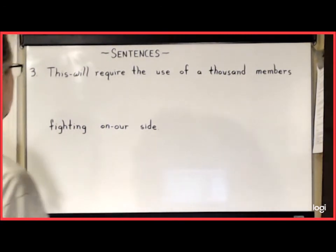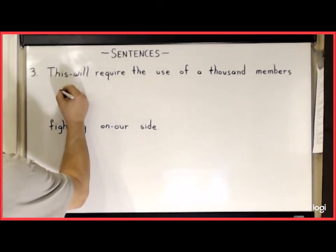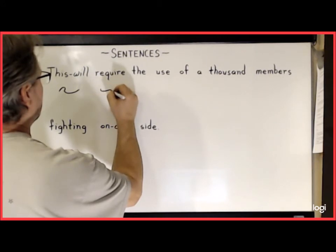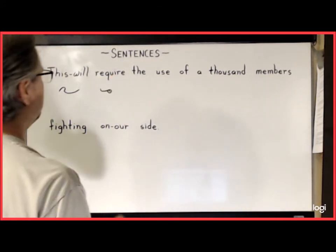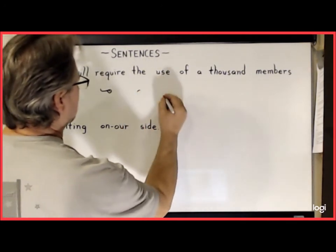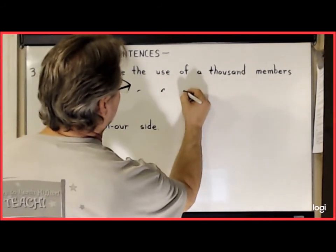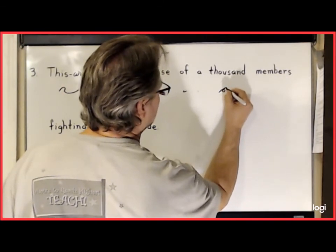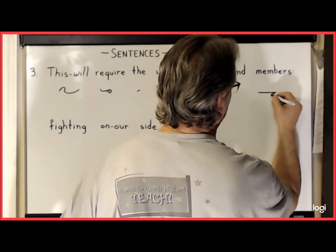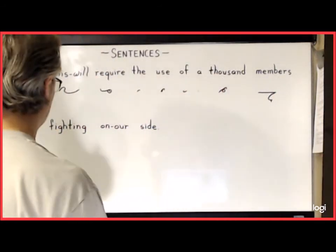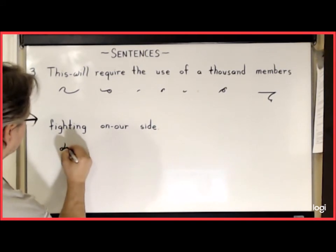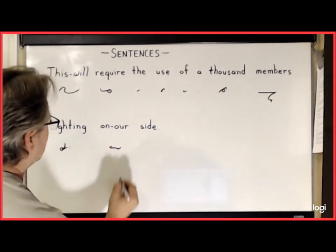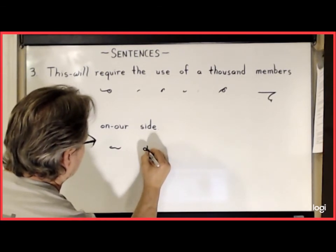For the third sentence: 'This will require the use of a thousand members fighting on our side.' 'This will' is the phrase T-H-S and L. 'Require' is R-K, long I, R-N. 'The' is just T-H. 'Use' is E-U. 'Of' is O. Dot for A. 'Thousand' is T-H, large circle for A, U hook. 'Members' is M-E-M stroke, B-R-S. 'Fighting' is F, long I, T, dot for I-N-G. 'On our' is O-N and R. 'Side' is S and long I. Then the period.